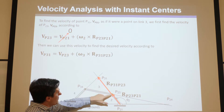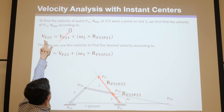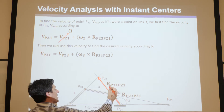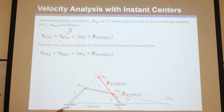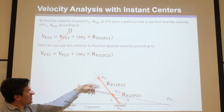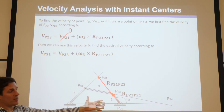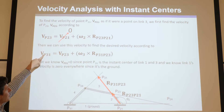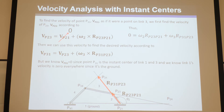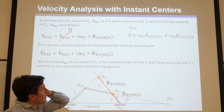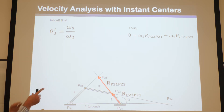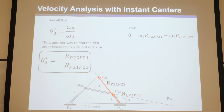That gives the velocity of that point on link 2. Because that point is also on link 3 as a coincident pin joint, it's also the velocity of that point on link 3. To find the velocity of the next point on link 3, we take that velocity and add omega_3 cross the vector from there to there. We know the destination is the instant center between 1 and 3 — a point on link 3 that has the same velocity as if it were on link 1 (the ground), so its velocity must be zero.